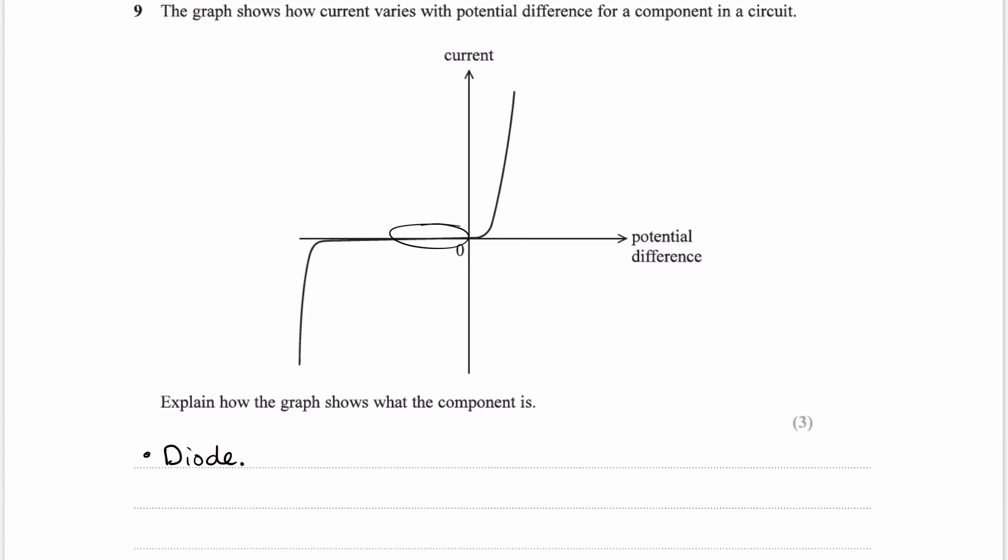Until you pass a certain value of voltage, the breakdown voltage, which is often past the diode's operating range of voltages. So you often wouldn't reach that value. But once you do pass it,